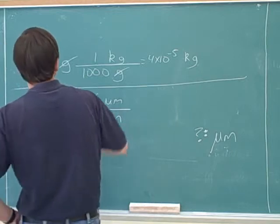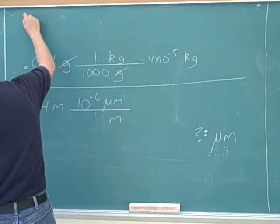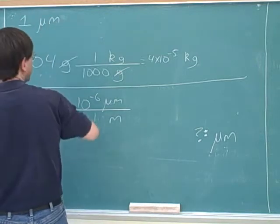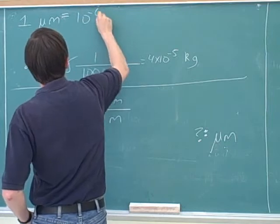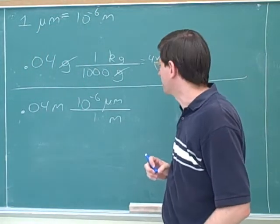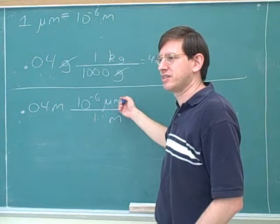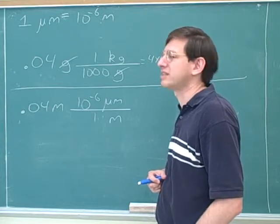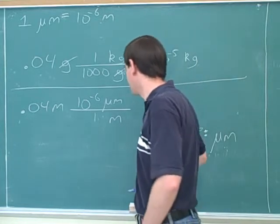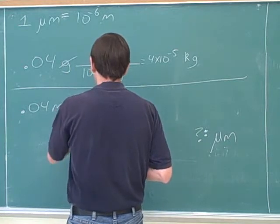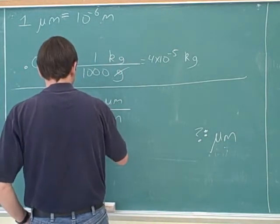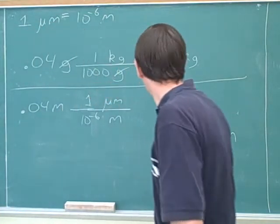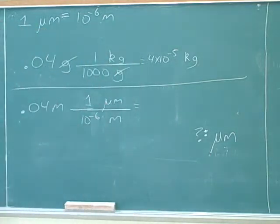So what that table is telling you is that it tells you what each of the prefixes mean. So what that table is actually telling us is that one micrometer equals 10 to the negative 6 meters, which I think maybe is the reverse of your first guess. Oh, okay. So it should be reversed. That's right.